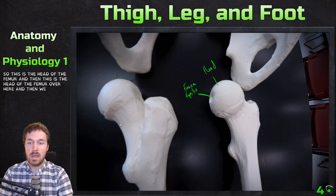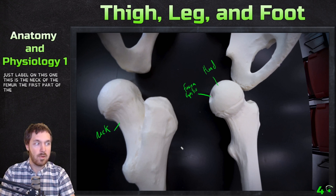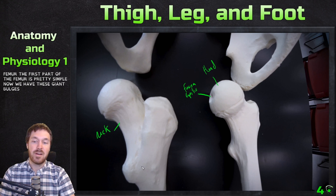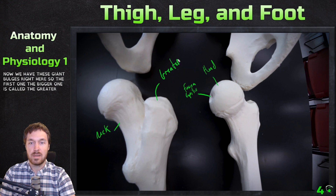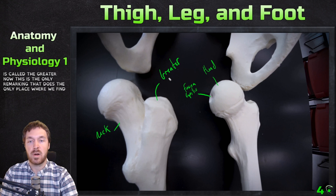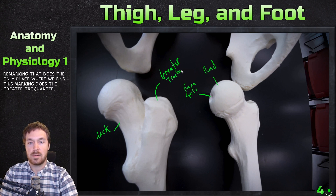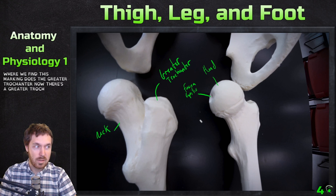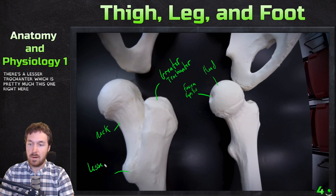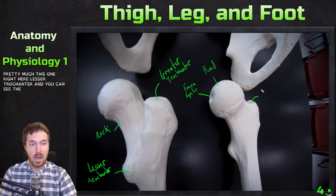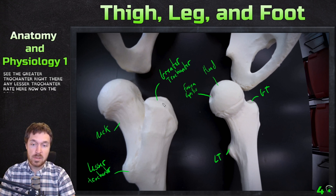Right here is the head of the femur, and below that is the neck of the femur. Then we have these giant bulges: the larger one is called the greater trochanter — the only place we find this marking. And if there's a greater trochanter, there's a lesser trochanter just below it. You can see the greater trochanter here and the lesser trochanter right here.